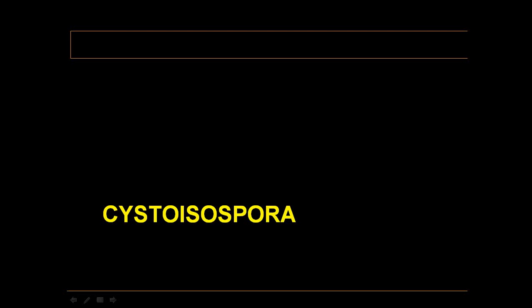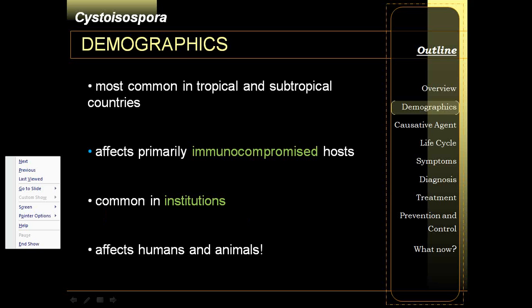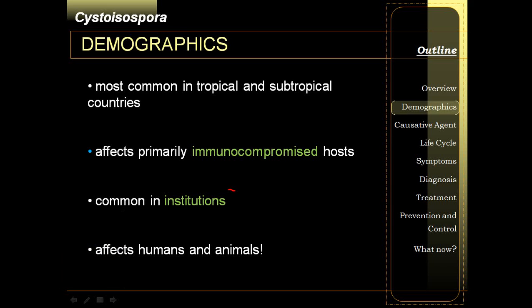For the third parasite, we talk about Cystoisospora. Cystoisospora is very much similar to the first two. However, it is more common in small institutions, in crowded institutions such as prisons, daycare centers, etc.